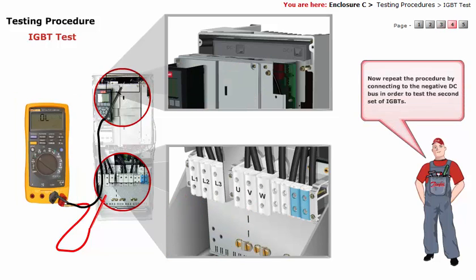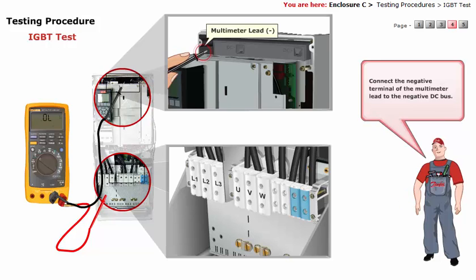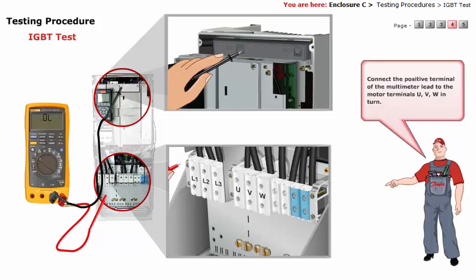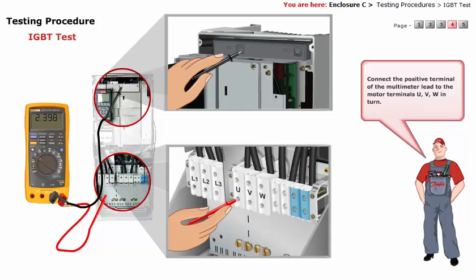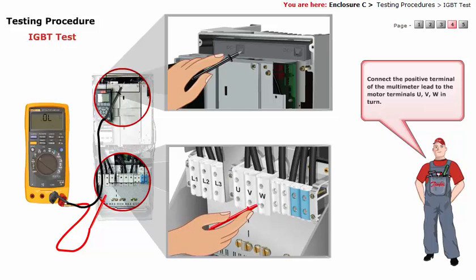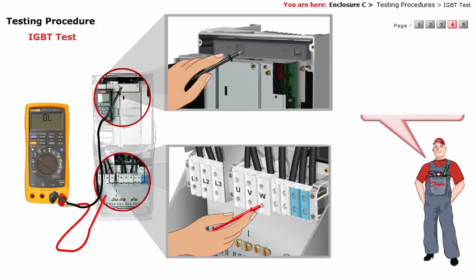Now, repeat the procedure by connecting to the negative DC bus in order to test the second set of IGBTs. Connect the negative terminal of the multimeter lead to the negative DC bus. Connect the positive terminal of the multimeter lead to the motor terminals U, V, W in turn. The multimeter should show the diode open.